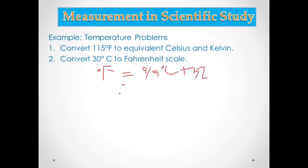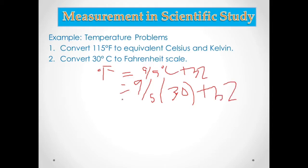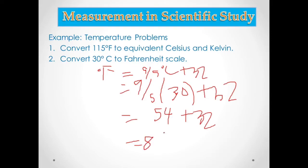Substitute the given: 9 over 5 multiplied by 30, then add 32. So 30 times 9 divided by 5 equals 54, plus 32 equals 86. The answer is 86 degrees Fahrenheit.